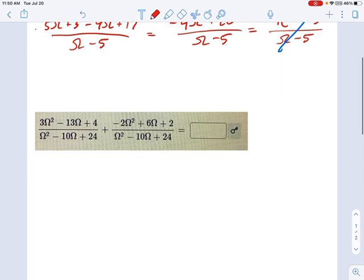Now let's move on to the next one. Again, same idea as before. My denominator is omega squared minus 10 omega plus 24. And, well, collect all your terms.